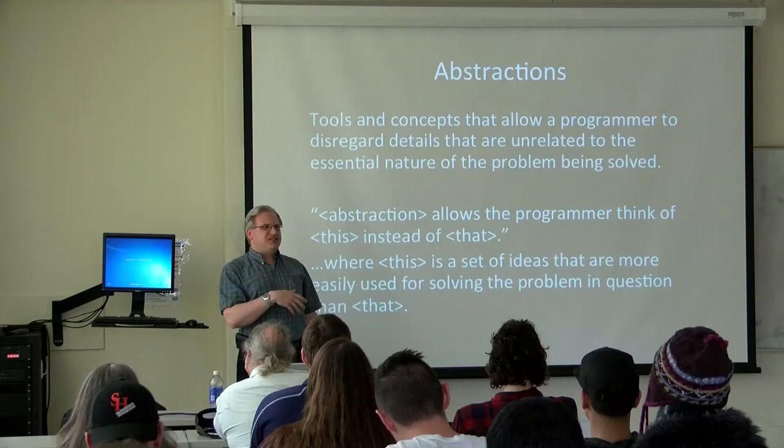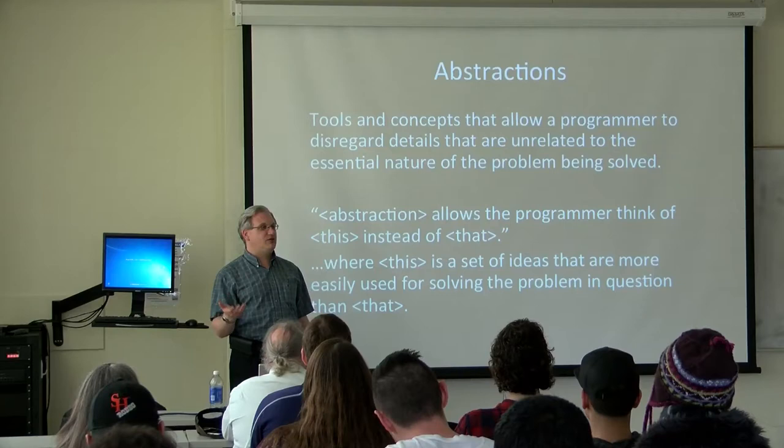When I say abstractions, I'm referring to tools and concepts that allow a programmer to disregard details that are unrelated to the essential nature of the problem being solved. So the key sentence that you'll hear me say variations of throughout this talk is a given abstraction allows the programmer to think of this instead of that. Where typically this is something that's a little easier for us humans to deal with. So this is a service to the humans. The computers don't care. So for example, the C++ string class allows the programmer to think about strings instead of character arrays.